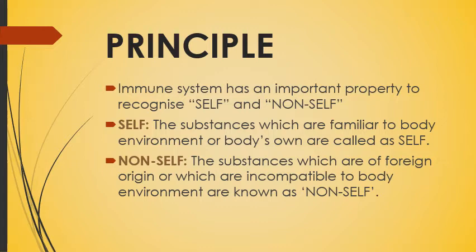The substances which are foreign in origin, which are incompatible to the body environment, they are called non-self. So basically the substances which enter our body and are not compatible with our body are considered as foreign particles — that is known as non-self. So the immune system has to accept the self and to reject the non-self. By this way our body will be protected from unwanted and foreign substances. This is the basic principle: our immune system can recognize and distinguish between self and non-self substances or cells.